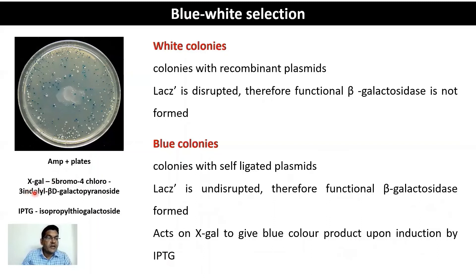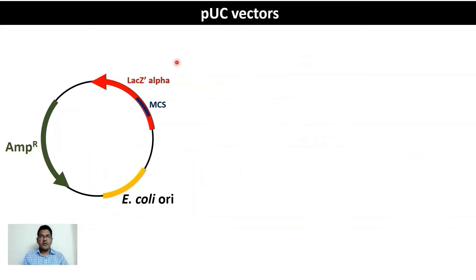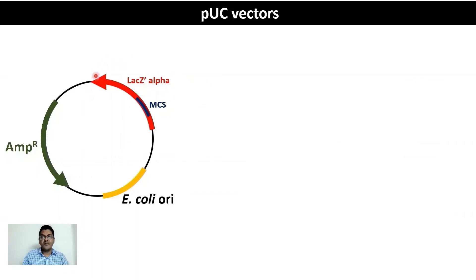pUC vectors are derived from pBR322 by modifications: the tetracycline resistance gene is removed and only the ampicillin resistance marker is retained. The E. coli origin of replication ensures continuous plasmid replication. The lacZ' alpha locus is added — from which the alpha fragment of beta-galactosidase is synthesized — and the MCS is placed within the lacZ' alpha locus. A recombinant plasmid disrupts the lacZ' locus and cannot synthesize the alpha fragment; a self-ligated plasmid keeps it intact and forms functional beta-galactosidase. This is the whole strategy behind blue-white screening.